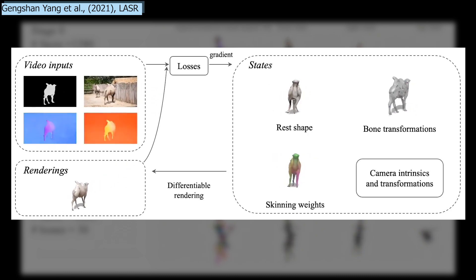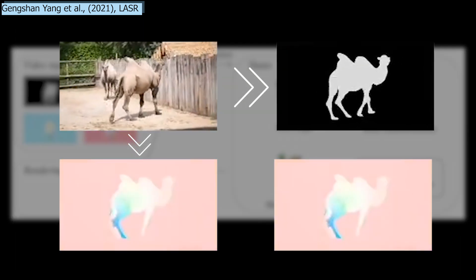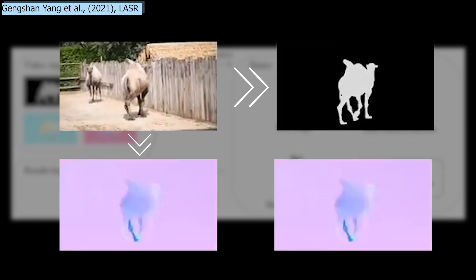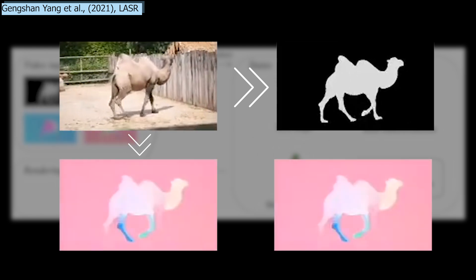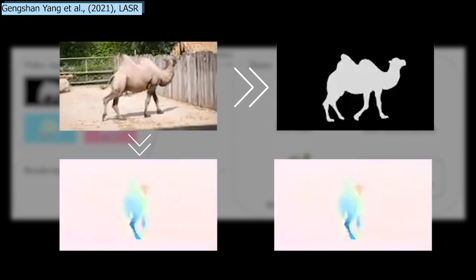So it doesn't even need to see a ground truth version of the rendered object. It only needs the video, segmentation, and optical flow results to learn by transforming back the rendered object into a segmented image and its optical flow, and comparing it to the input.